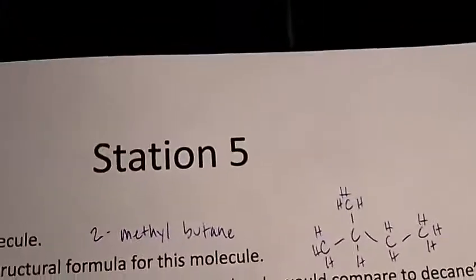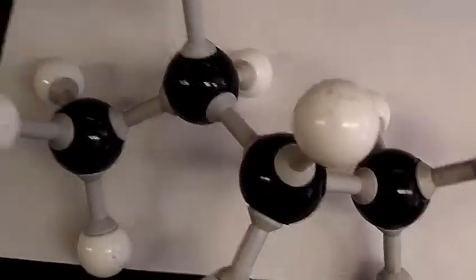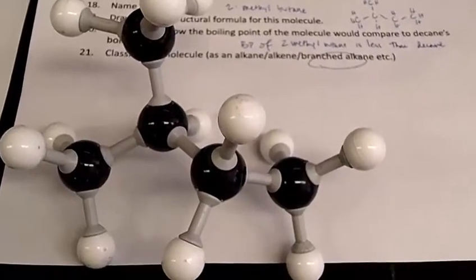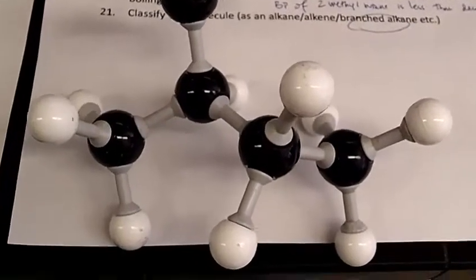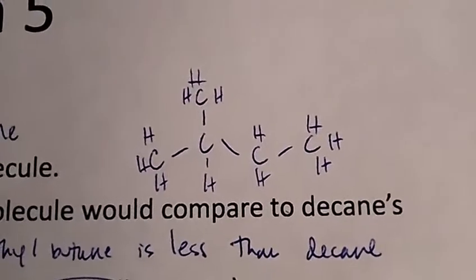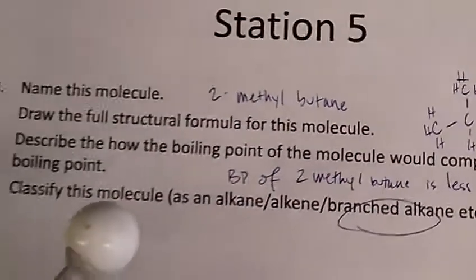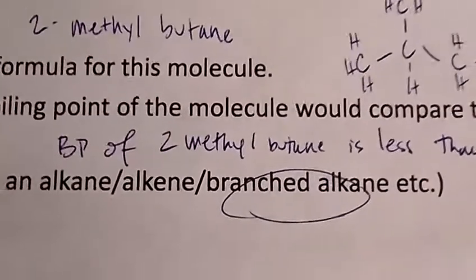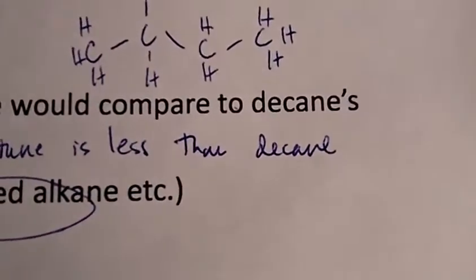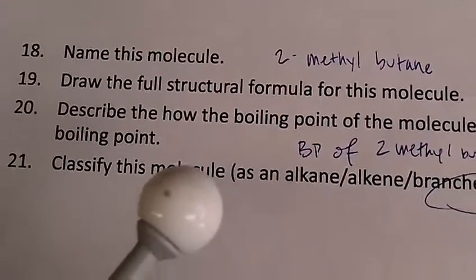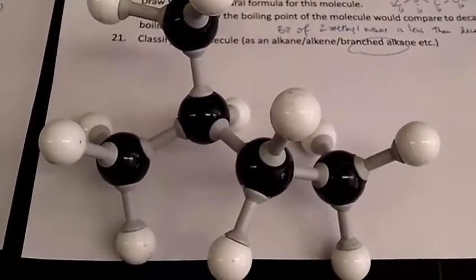Station five was this molecule — you can see that it's a chain of four carbons with a branch on it. The name of that molecule is 2-methylbutane. The full structural formula for this molecule would look like this. In describing its boiling point compared to decane, the boiling point of 2-methylbutane is much less than the boiling point of decane. This is of course a branched alkane.